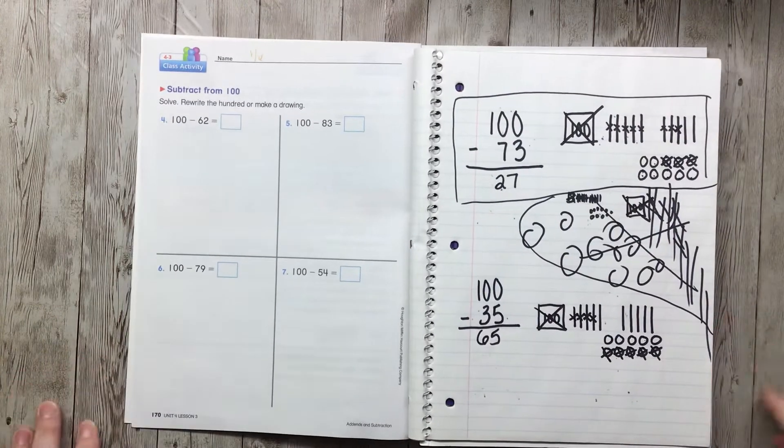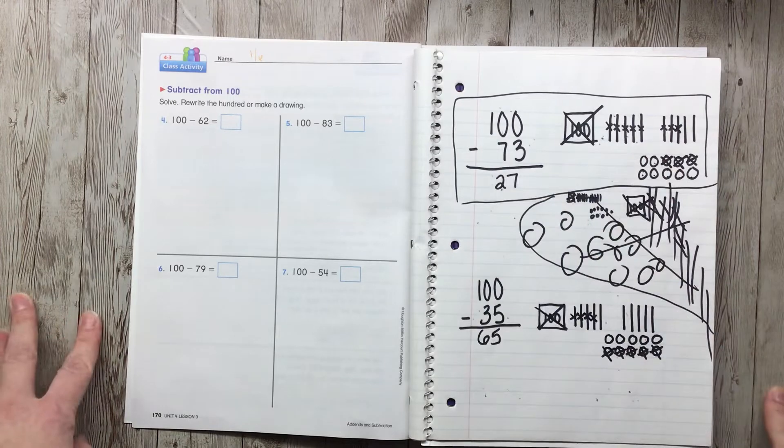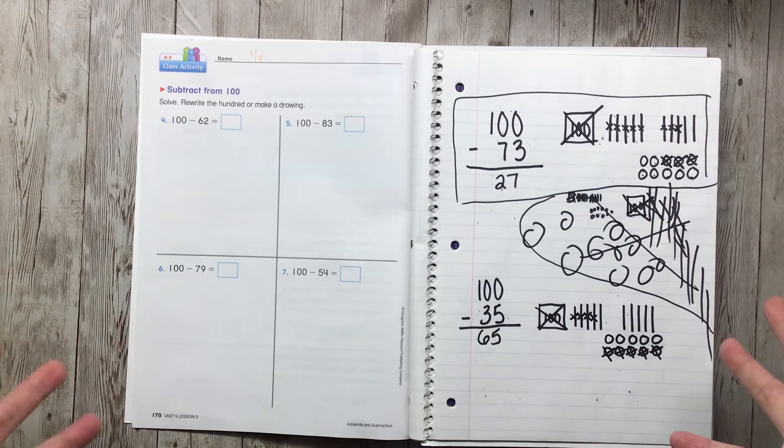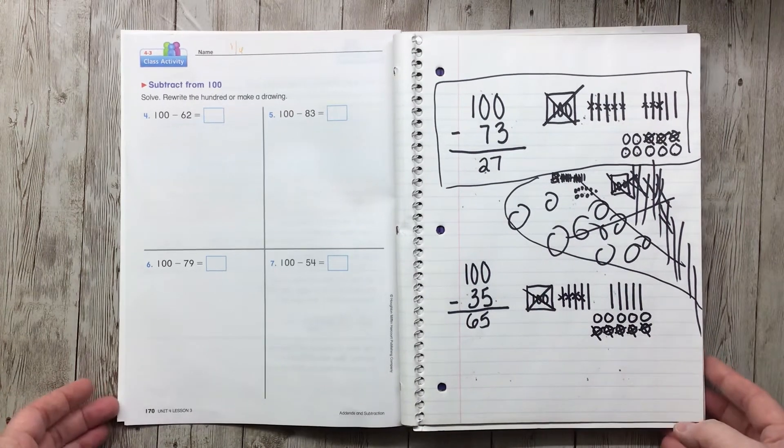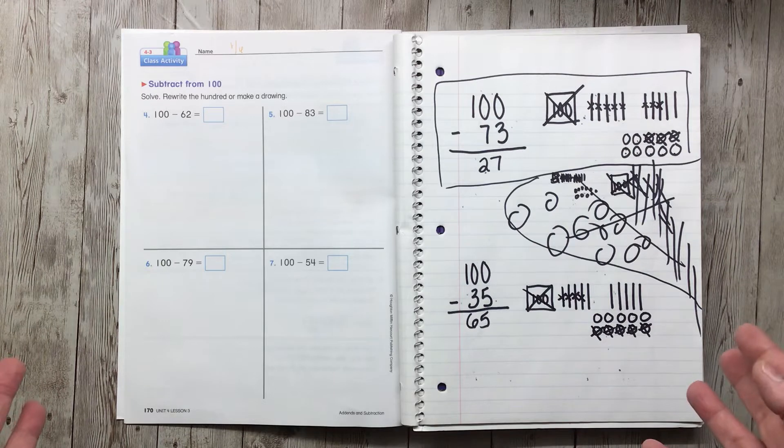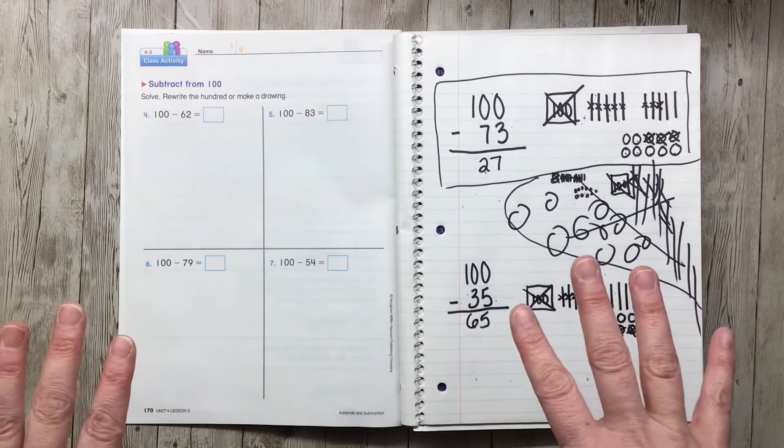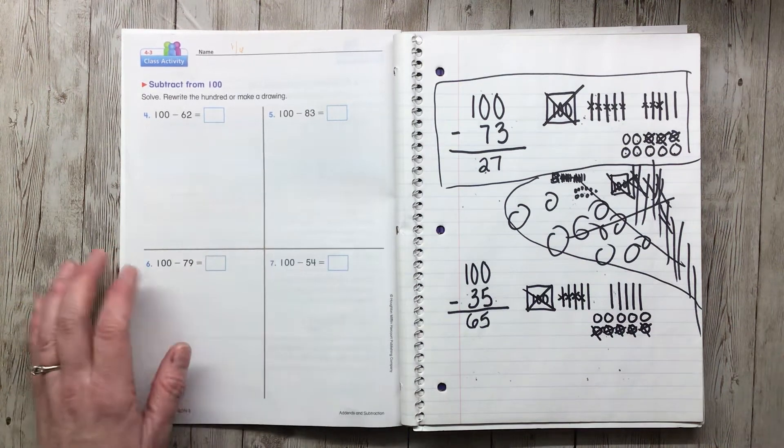Hi friends! Yesterday we practiced drawing pictures of these equations where we're subtracting from 100. So today on Wednesday, January 6th, this is asynchronous, but I want you to practice that skill. So today you're going to do these ones on your own.